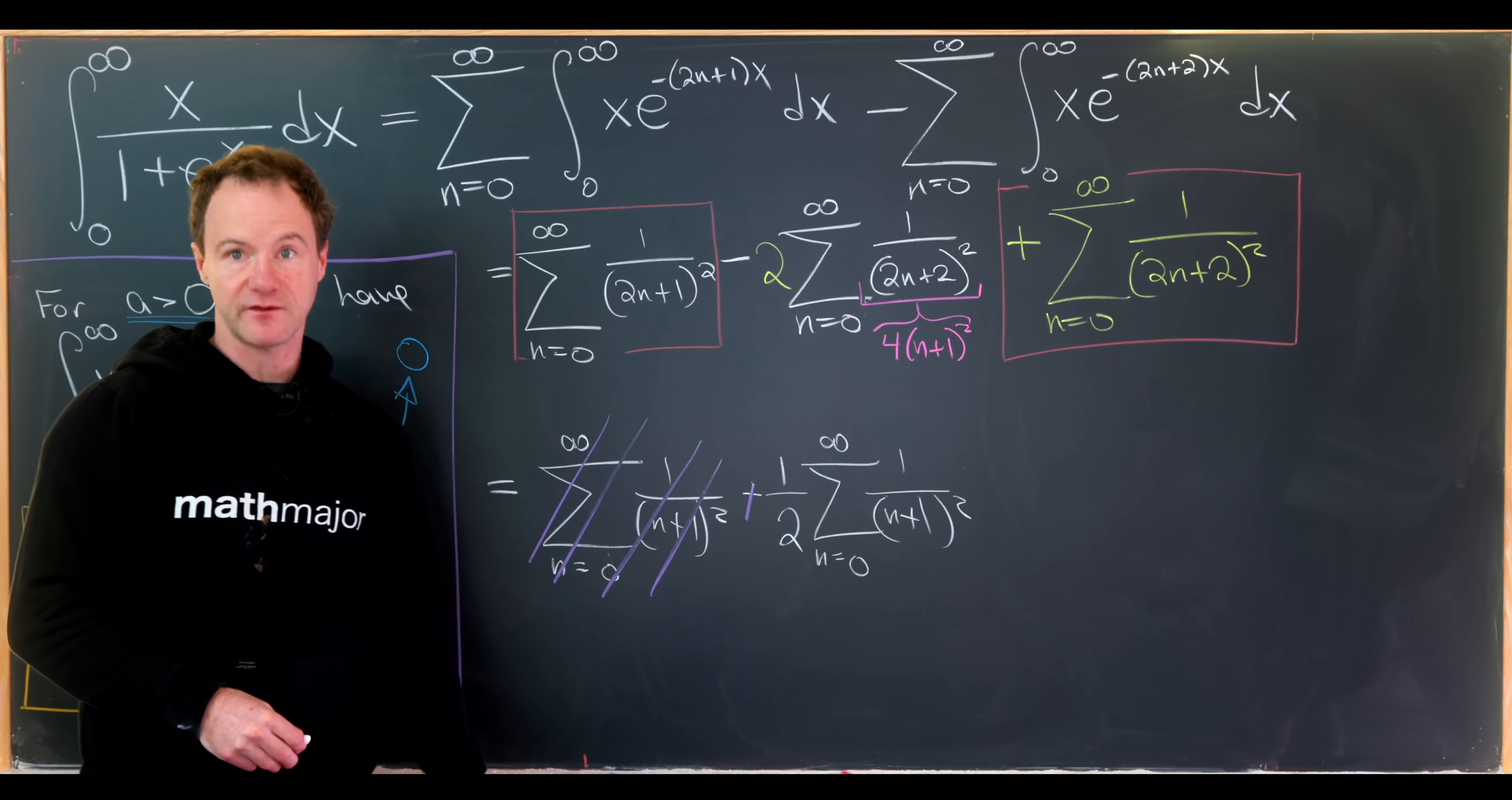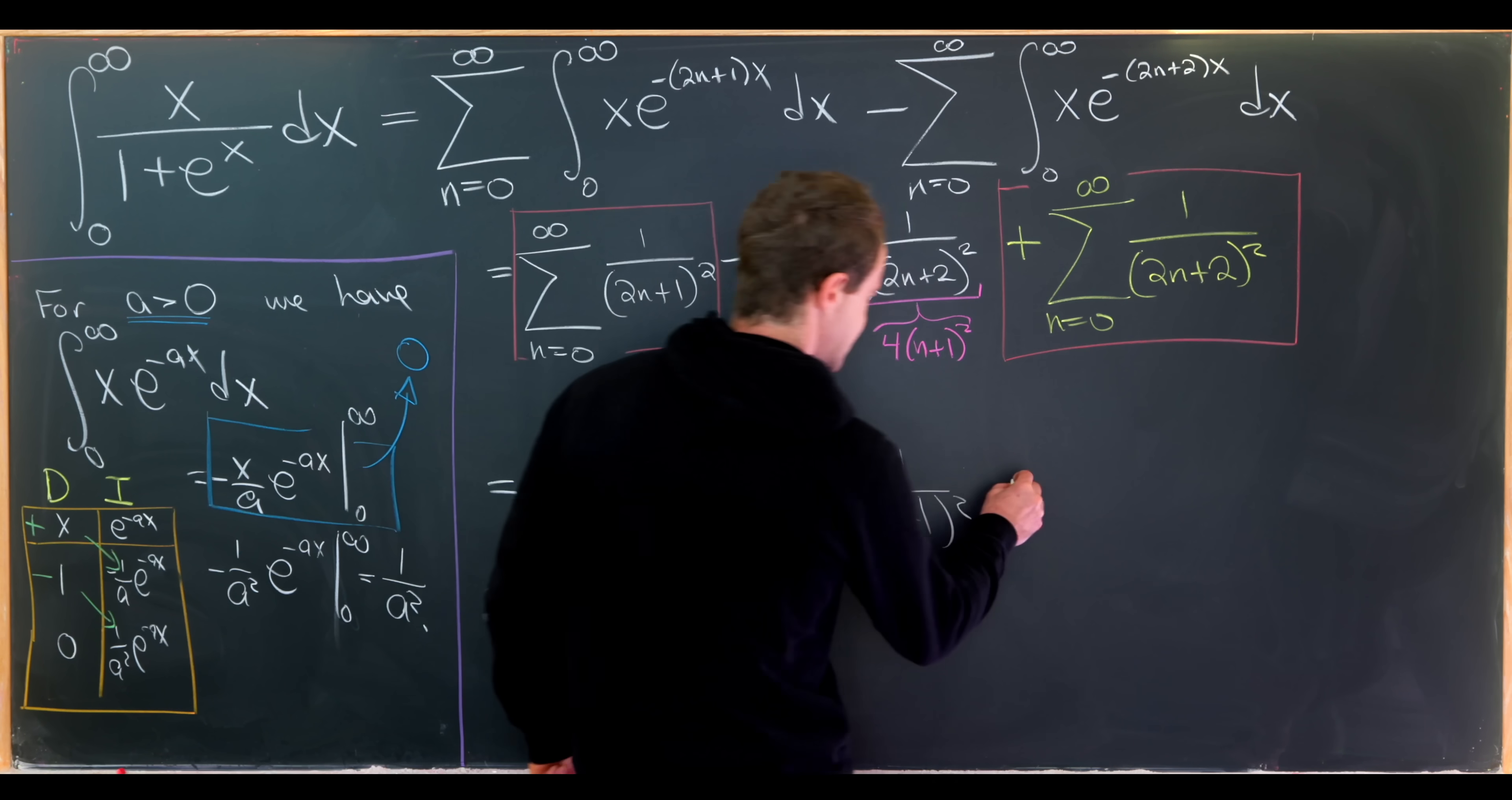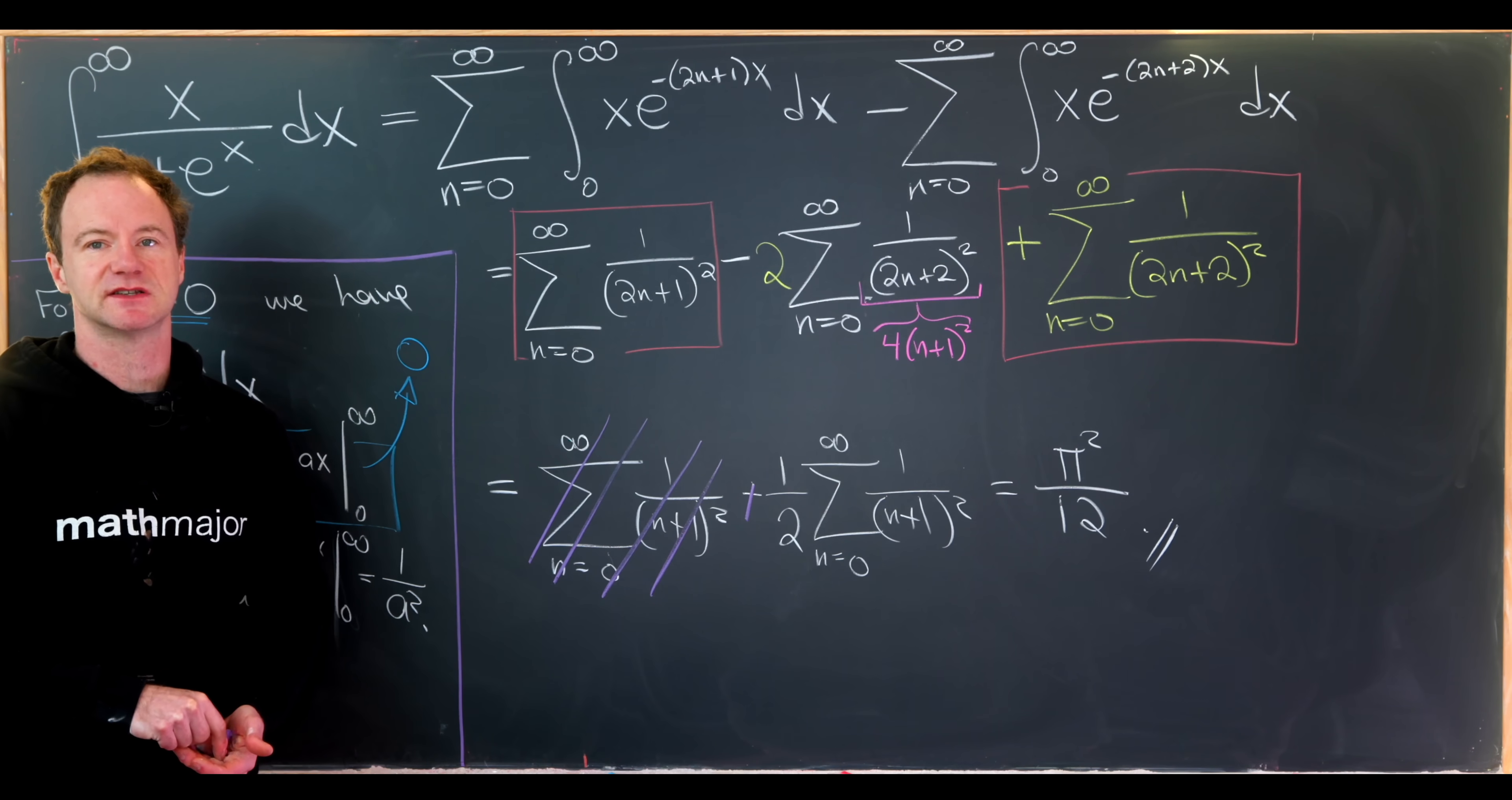But then this is a well known value, the sum of the reciprocal of the squares, that's the Basel problem. I've done that in a bunch of videos on the channel before. That gives us pi squared over 6. So our final answer is one half pi squared over 6. In other words, pi squared over 12. And that's a good place to stop.